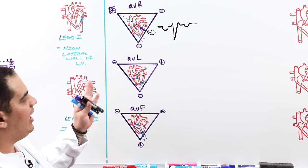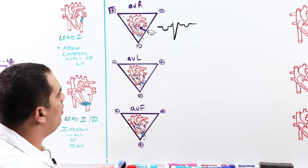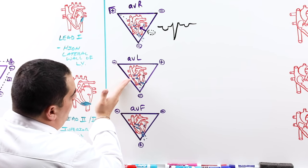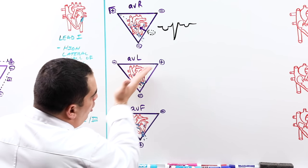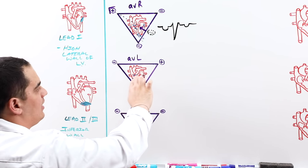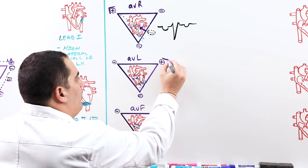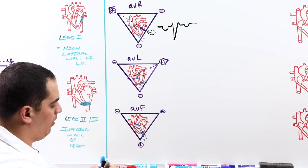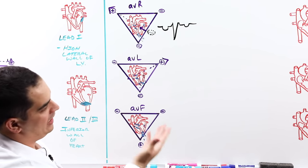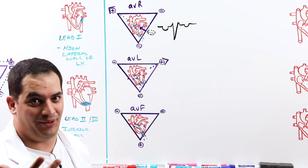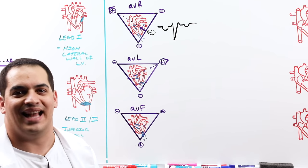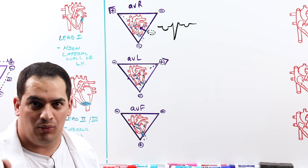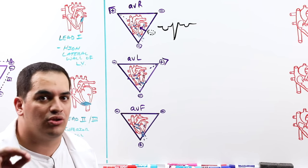This is very important to remember: AVR and lead two should be opposite of one another in their waveforms. For AVL, the machine creates negative electrodes on the right arm and left leg, with positive on the left arm. Following all the vectors gives the same result as lead one — an upright waveform. Lead one and AVL are essentially the same, both telling us about the high lateral wall of the left ventricle.